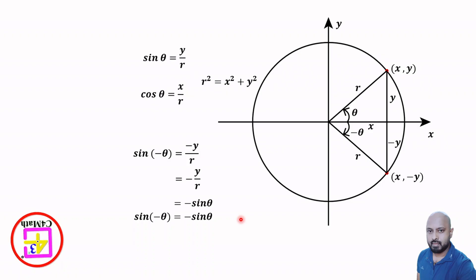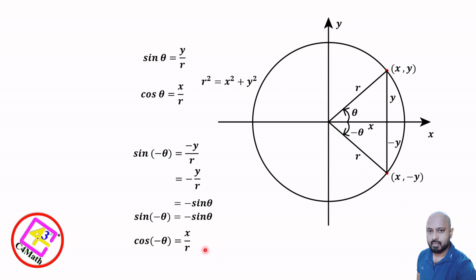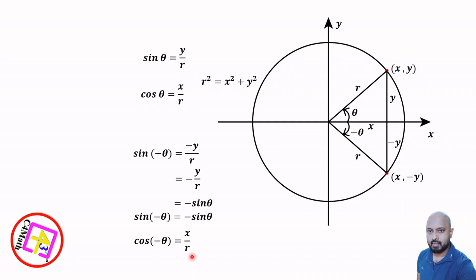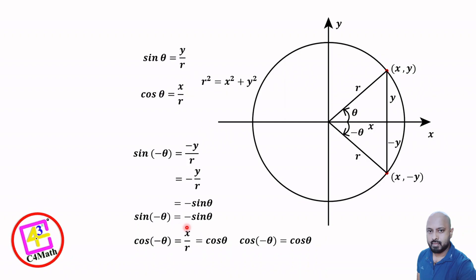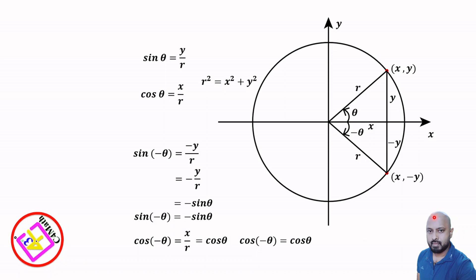Now we check cos(negative theta). Cos(negative theta) equals adjacent side over hypotenuse, which is x over r. We know x over r equals cos theta. Therefore, cos(negative theta) equals cos theta. That is the second relation. So in summary: sin(negative theta) equals negative sin theta, and cos(negative theta) equals cos theta. Thank you.